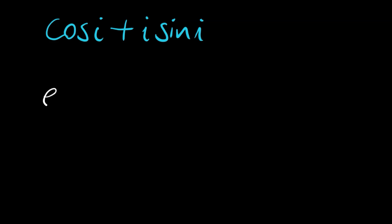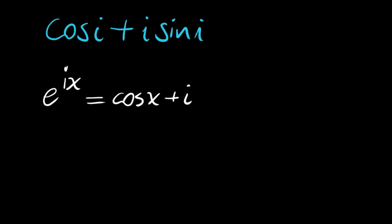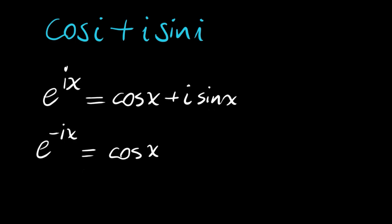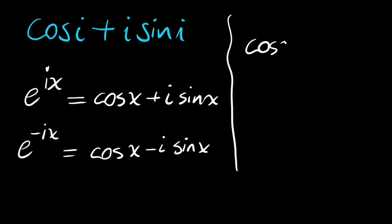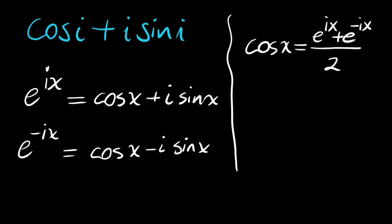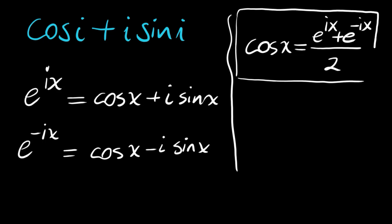Let me remind you that e to the power of ix is equal to cosine x plus i times sine x. And e to the power of negative ix equals cosine x minus i sine x, since cosine is even but sine is odd, which factors out the negative sign. By adding these two equations, we can find that cosine x equals e to the power of ix plus e to the power of negative ix, divided by 2. This is the complex expression of the cosine function.